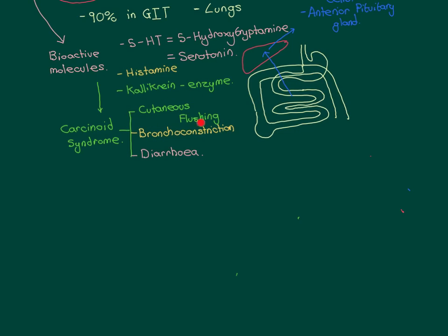Cutaneous flushing is caused by the kallikrein enzyme. To understand this, we need to understand the kallikrein-kinin system, which is an important positive feedback system for maintaining inflammation. I'll explain what kallikrein is and its normal role in the kallikrein-kinin system, and then explain its role in the carcinoid syndrome.